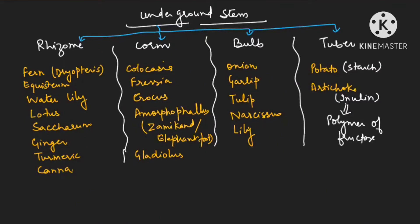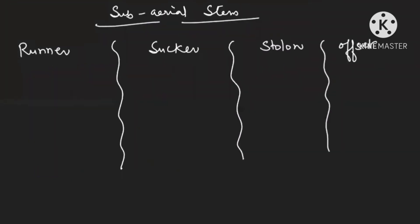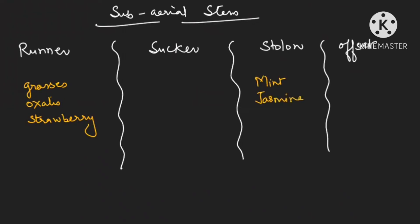These are the list of examples of underground stem modifications. For subarial stem modifications: runner examples are grasses, oxalis — this is your NCERT diagram given on page 69 — and strawberry. Stolon examples are mint and jasmine. Sucker examples are banana, pineapple, and chrysanthemum.